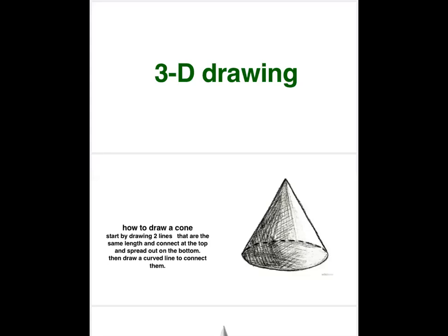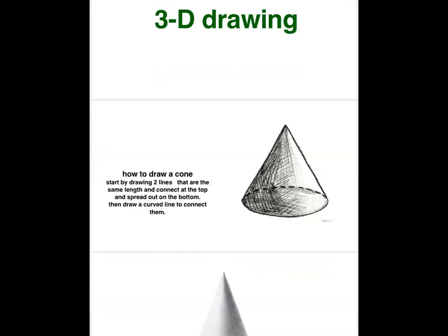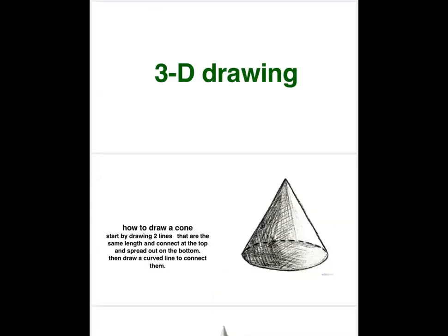Bear with us, kids. A lot of times when people try to do three-dimensional pictures, they draw the two lines for a triangle and then make the bottom line straight, and then they wonder why it looks flat on the paper. To make something three-dimensional, you actually have to curve the bottom and not make it a straight flat bottom. The two sides connect at the top and spread out towards the bottom, then you can draw a curved line at the bottom without having to draw the dotted line in the back.